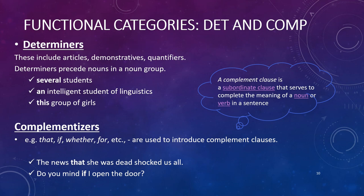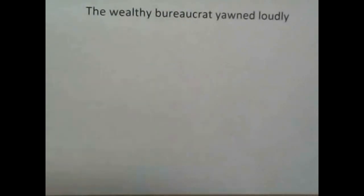Another example: 'Do you mind if I open the door?' There are actually two clauses here. The first verb is 'mind' and the second verb is 'open,' so two main verbs suggest two clauses. Clause one is 'do you mind?' and clause two is 'I open the door.' These are connected together with a complementizer, namely 'if.'